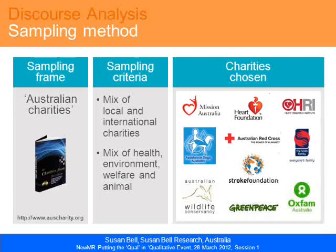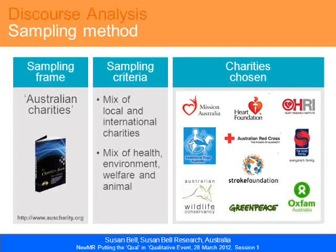We had a sampling frame — there's a book called Australian Charities which lists, I think, all of them. We wanted to select 10, with a mix of local and international charities, a mix of health, environment, welfare and animal charities. Those logos show the charities that were used — a mix of large and small, familiar and not so familiar.